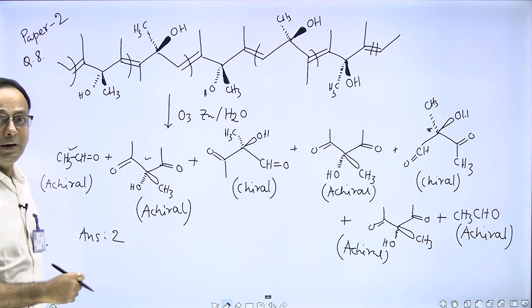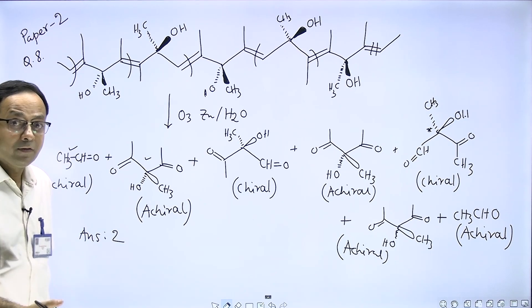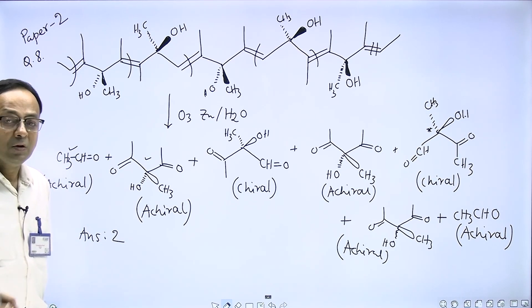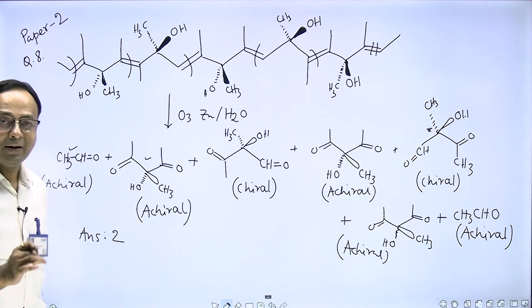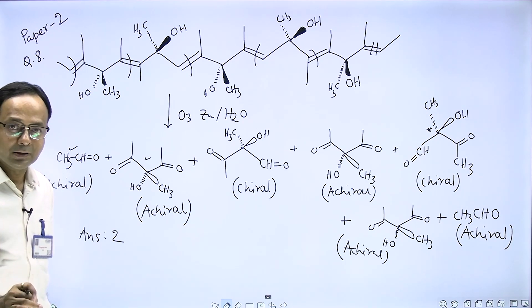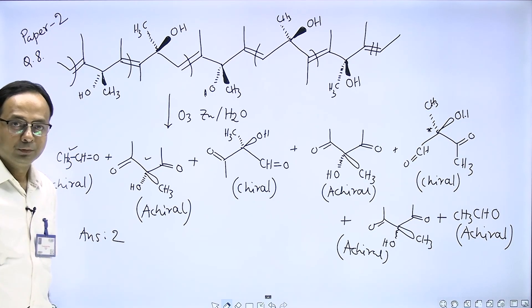Here you can see these two chiral compounds are related as enantiomers - they are not considered as the same compound, so you have to consider both chiral compounds. So the answer is two - the number of chiral products formed in this reaction. Answer is two.